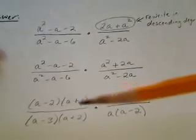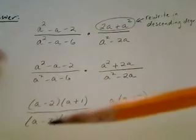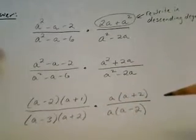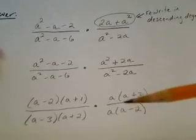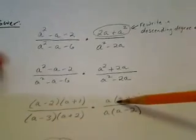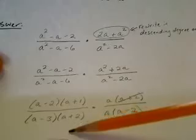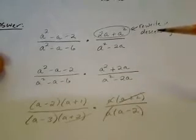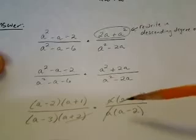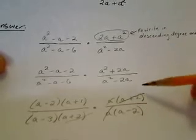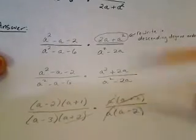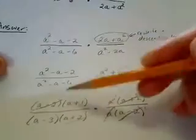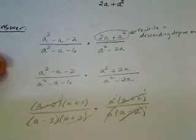Each term in the numerator is being multiplied by every other term, and same in the denominator. As long as I'm multiplying and I see the exact same factor on top and bottom, I can cross them out. I see (a plus 2) in a numerator and (a plus 2) in a denominator — those cancel. I see an a on top and an a on bottom — those cancel, since a over a equals 1. Then I see (a minus 2) on top and (a minus 2) on bottom — those cancel as well.